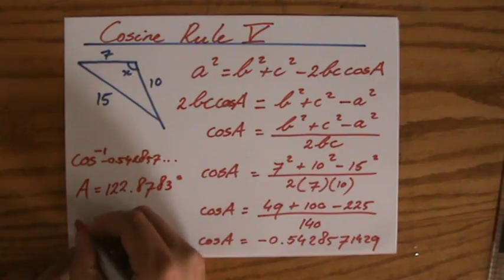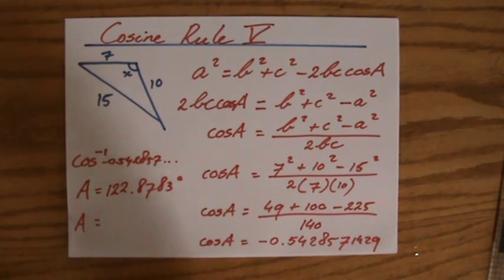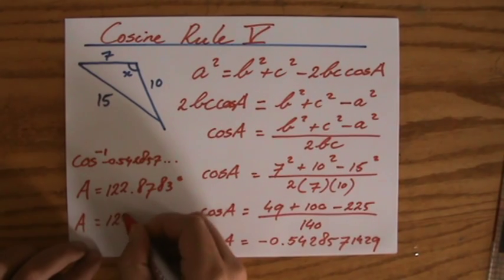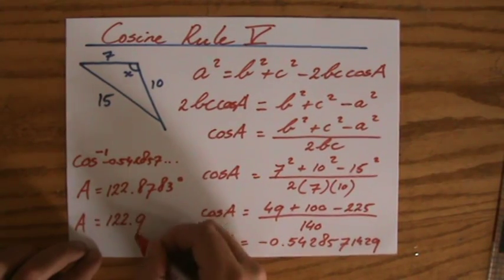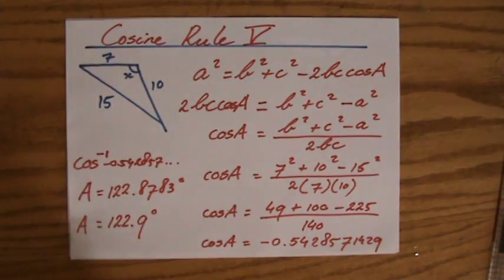Angles, you always give not two, three significant figures. One decimal place, 122.9 degrees. Fantastic.